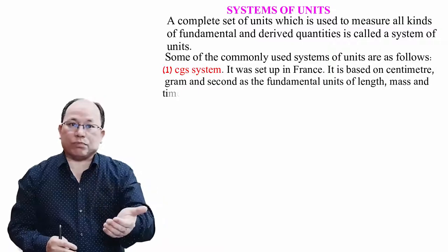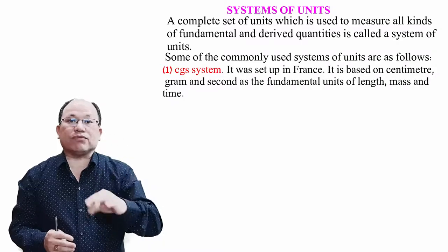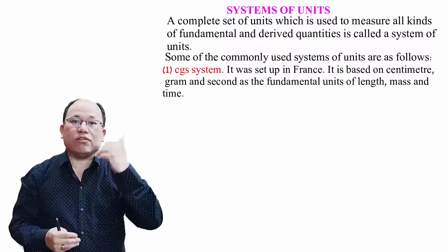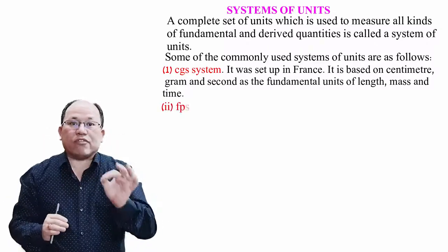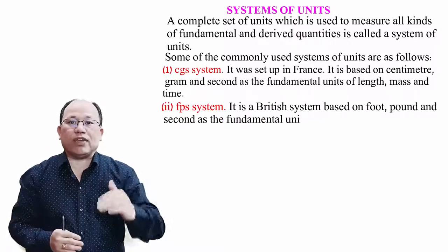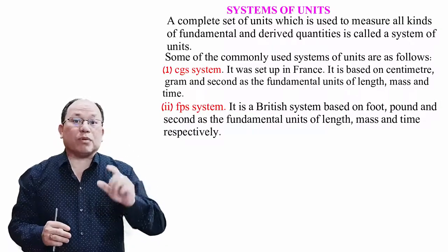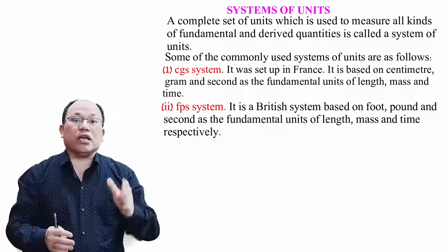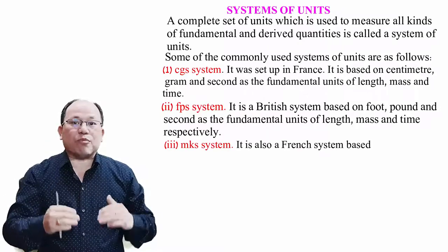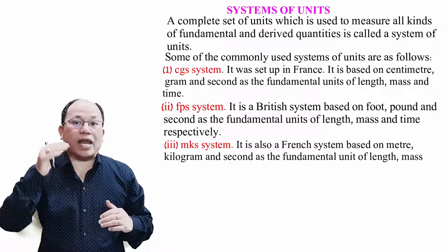CGS: C stands for centimeter, G stands for gram, S stands for second. Next is FPS — it is a British system based on foot, pound, and second as the fundamental units of length, mass, and time respectively. Third is MKS, which is also a French system based on meter, kilogram, and second as the fundamental units of length, mass, and time respectively.